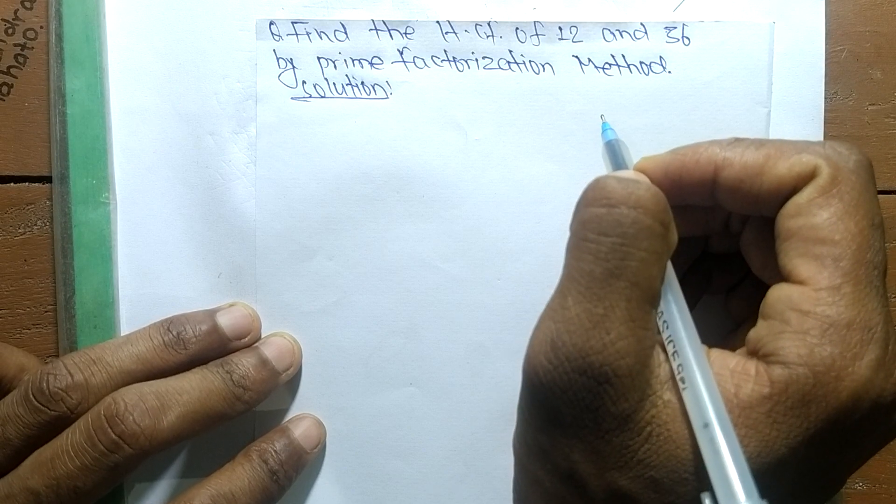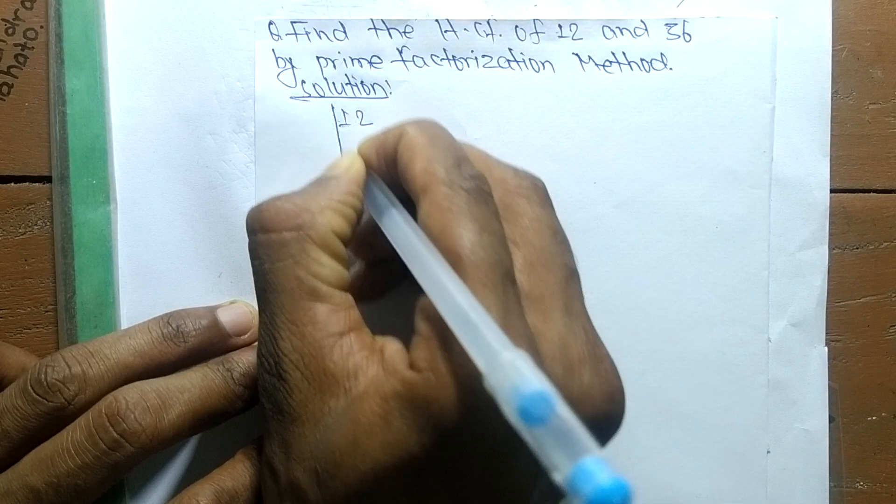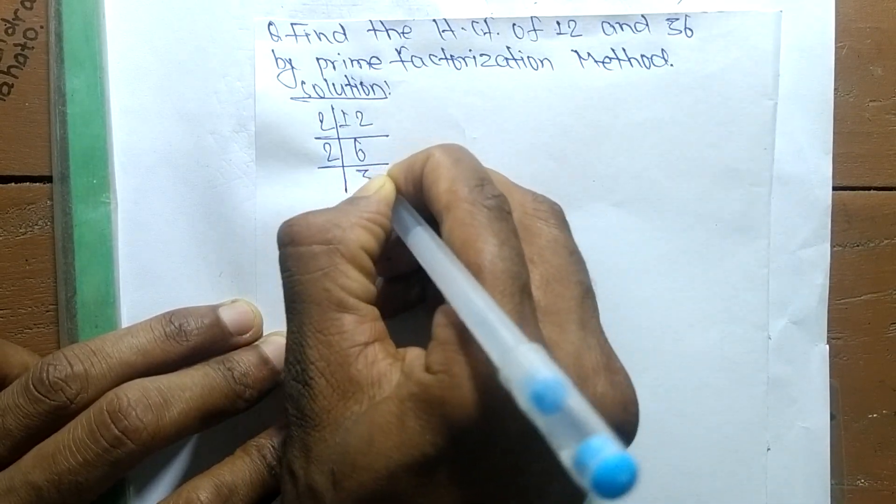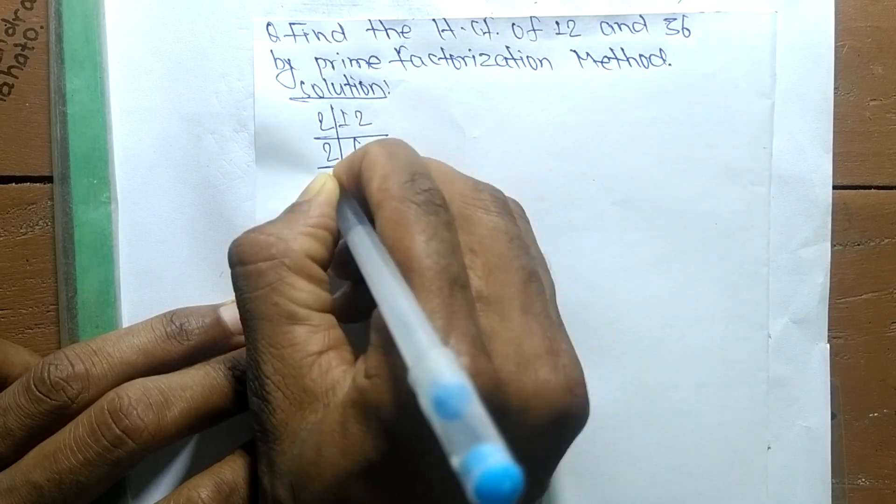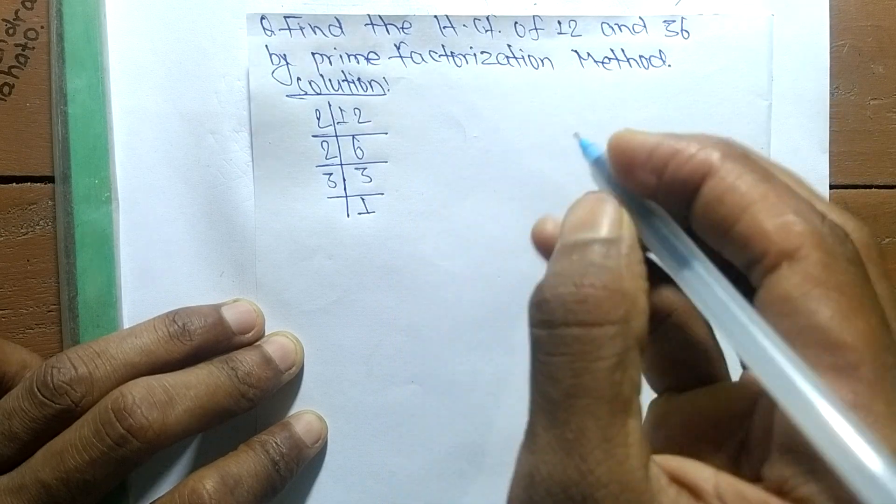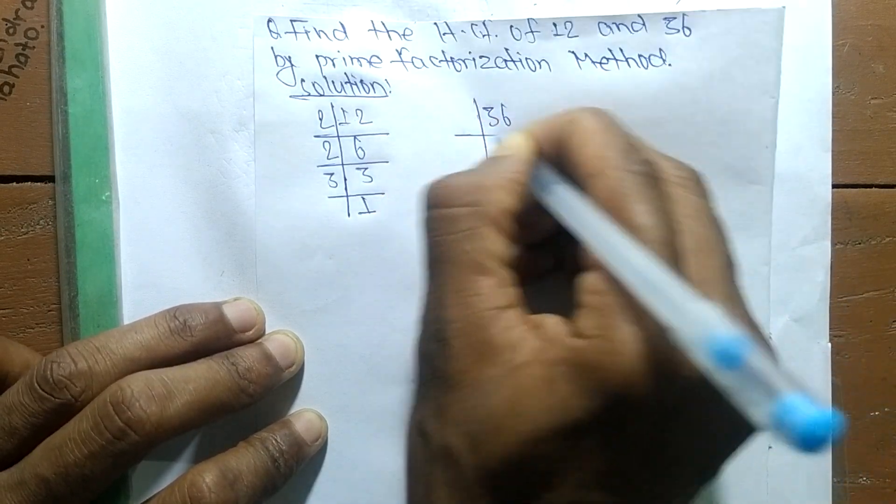First, we find the prime factors of 12. So it is 2 times 6 equals 12, 2 times 3 equals 6, and 3 times 1 equals 3. Like this, the prime factors of 36 are: